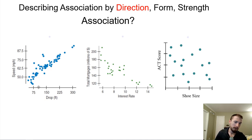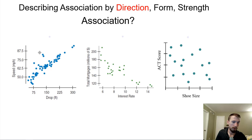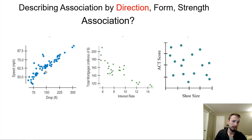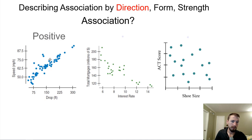As we increase the drop — the total height of a roller coaster — the speed is going to go up. Some are even faster with a smaller drop, probably metal roller coasters with a low coefficient of friction. Some have very low speeds for the expected drop, probably wooden or older roller coasters with more energy loss. This is basically measuring conservation of energy — as we increase potential energy, kinetic energy increases. So this would be a positive association between the total height of the drop and the speed of the car.